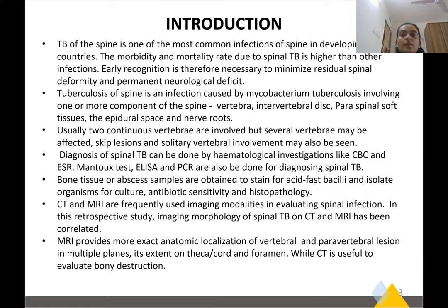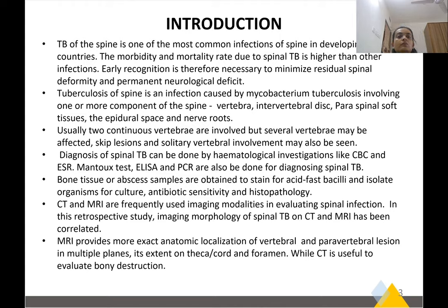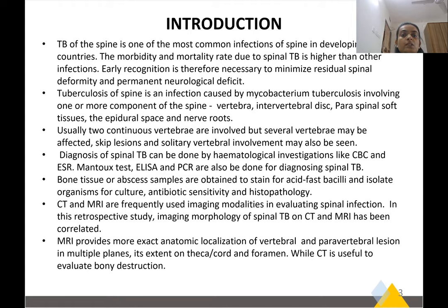TB of the spine is one of the most common infections of the spine in developing countries. The morbidity and mortality rate due to spinal TB is higher. It is caused by Mycobacterium tuberculosis and affects various parts of the spine like vertebrae, intervertebral disc, paraspinal soft tissue, epidural space, and nerve roots. Usually two continuous vertebrae are involved, but several vertebrae may be affected. Skip lesions and solitary vertebral involvement may also be seen.